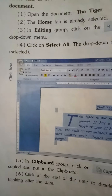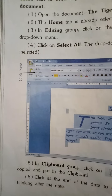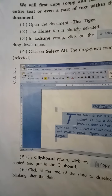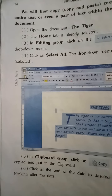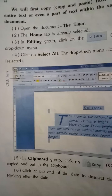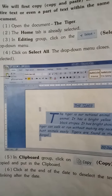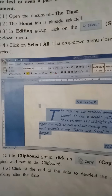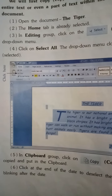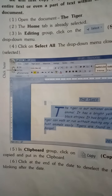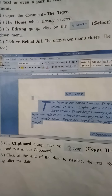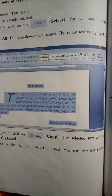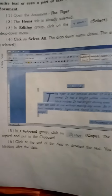In the Clipboard group, click on Copy. The selected text will be copied and put in the clipboard. Clipboard group के अंदर Copy के उपर click करना है — text copy होकर clipboard में store हो जाएगा।